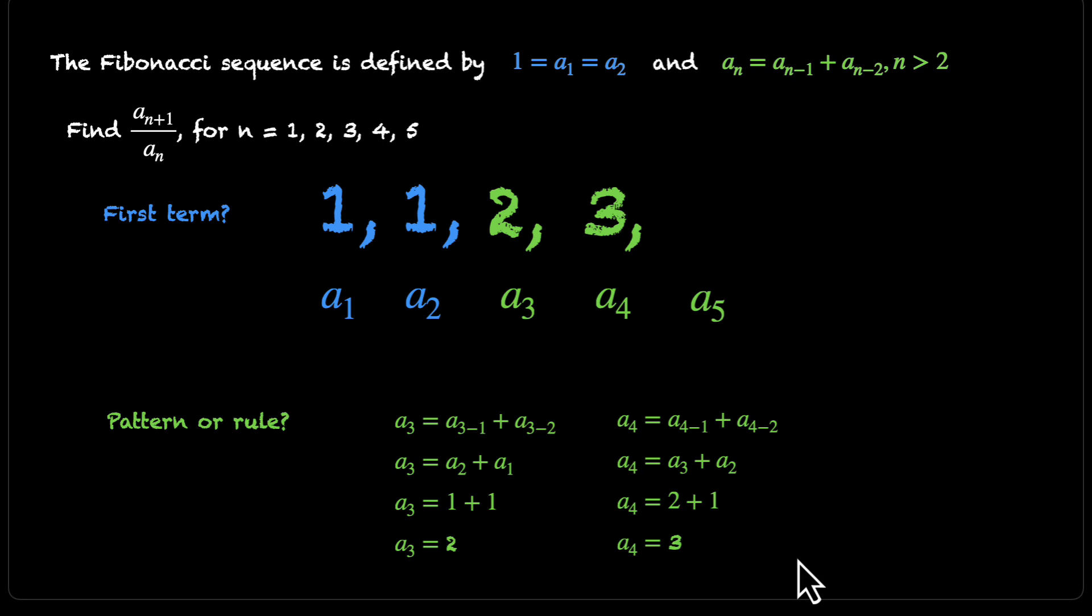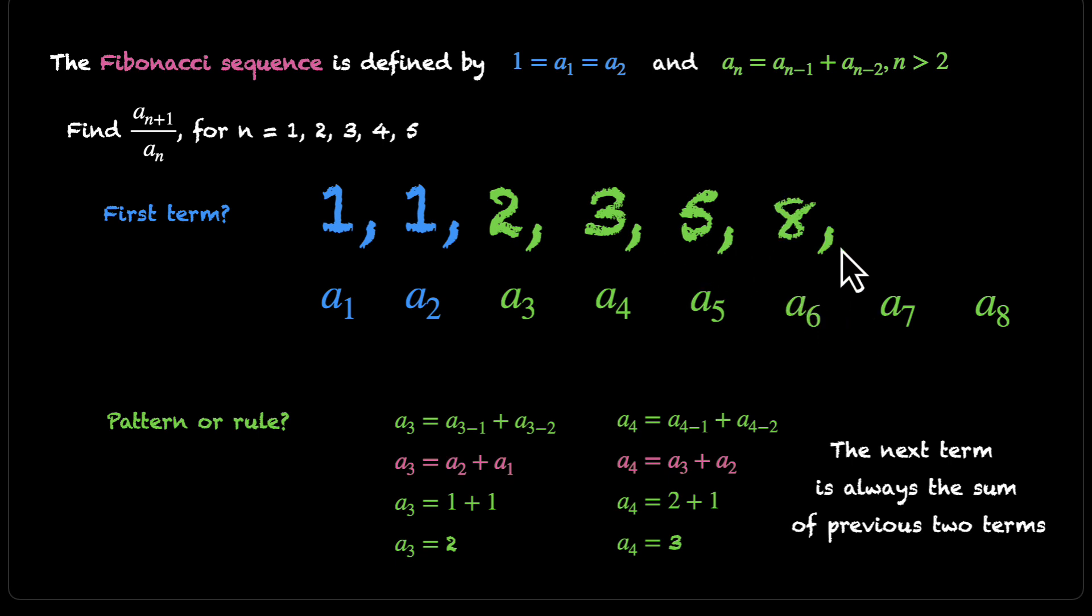Now we can write all these steps down, but we can also notice something interesting. a3 = a2 + a1 and a4 = a3 + a2. The next term is always the sum of the previous two terms. So we don't have to write all of this; we can just add the previous two terms. 2 + 3 gives us 5, that's our fifth term. In fact, we can keep going. The sixth term is 3 + 5, that's 8. Next is 5 + 8, that's 13. And the next one is 8 + 13, that's 21.